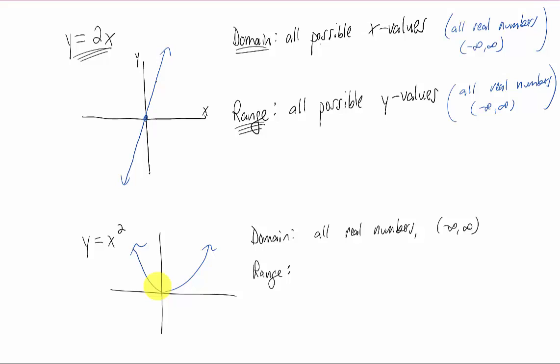The range of this function is all the possible y values that are spit out by this function. And you'll notice that this function never spits out a y value that's negative. No matter what input we plug in, we always get an output that is a number that's zero or bigger. So our range is all of our y values that are greater than or equal to zero. The way that we write this is zero to infinity.